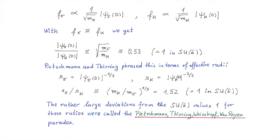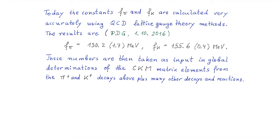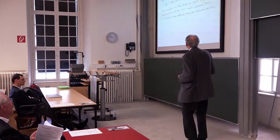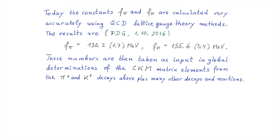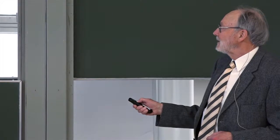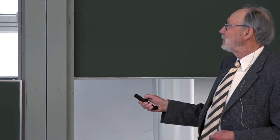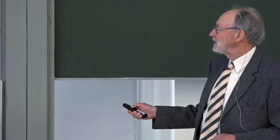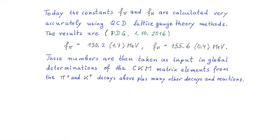What is the status today? Today these constants are calculated very accurately in lattice gauge theory, QCD lattice gauge theory. From last year in the particle data group, you find this number 130.2 with an error of 1.7 MeV. Amazing, absolutely amazing. F k, 155.6 with an error of even less, 0.4 MeV. These numbers are then taken as input in global determinations of this Cabibbo-Kobayashi-Maskawa matrix elements from pion and kaon decays and many other reactions.